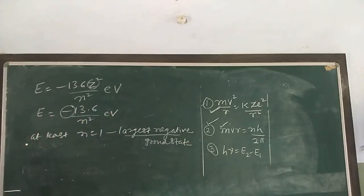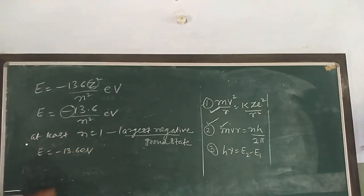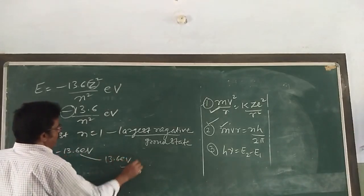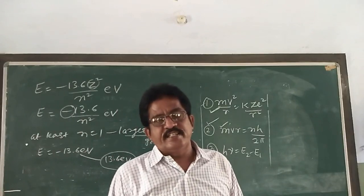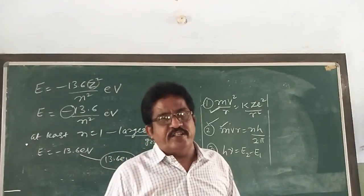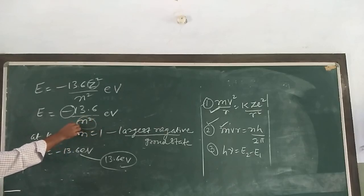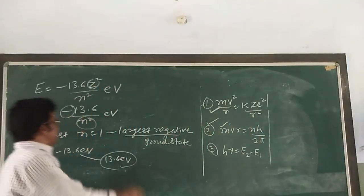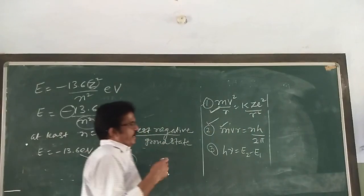This state of lowest energy is called the ground state, and the energy of this state is −13.6 eV. Therefore, the minimum energy required to free the electron from the ground state of the hydrogen atom is 13.6 eV. This is called the ionization energy of the hydrogen atom.